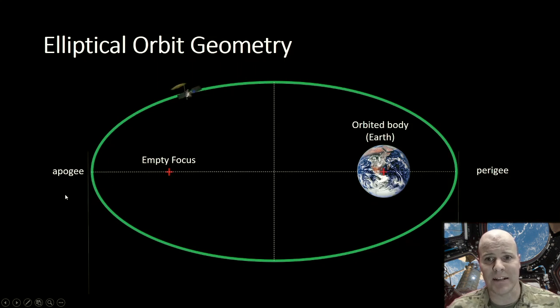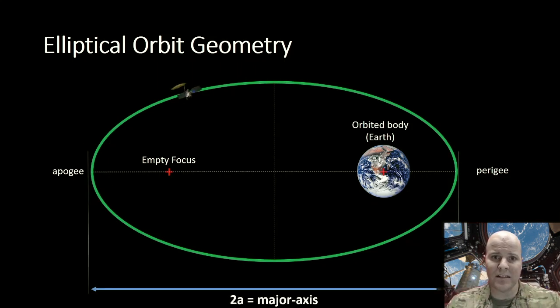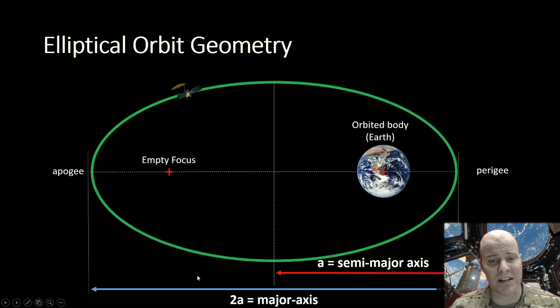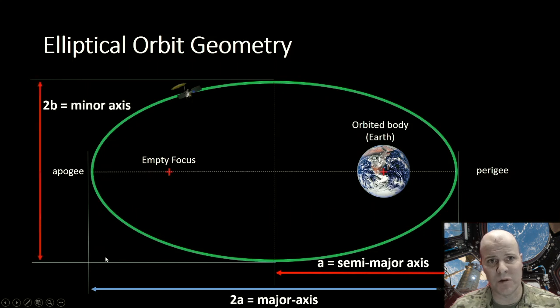Our ellipse has two axes here. Our major axis is the long axis, and that's going to be defined as 2a. We do that so that we can define our semi-major axis, or half of the major axis, as simply a. The minor axis is going to be equal to 2b. We can also define the distance between our foci as 2c.